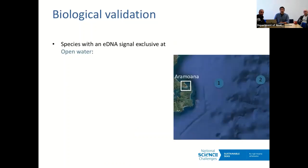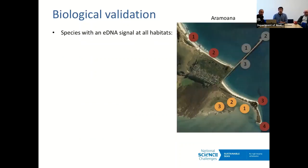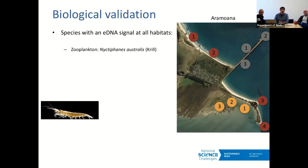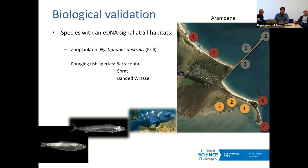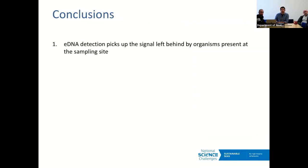Our open water reference is characterized by very low biodiversity — no coastal organisms whatsoever — and we do detect open water species like spiny dogfish. Species found across all habitats are those you'd expect to be ubiquitous: krill, but also foraging fish that don't care where they forage — barracouta, sprat, banded wrasse. We also detect drift kelp, which you find pretty much anywhere.